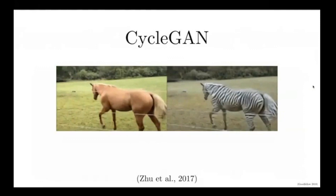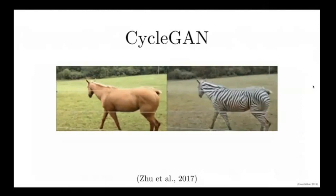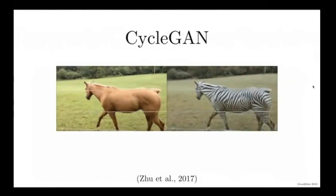It's interesting because the CycleGAN doesn't actually know what we want it to do. We tell it it should convert the horse photos into the zebra photos, but we don't ever have any interface to the model specifying that the horse itself is the part that we care about. And so it just does its best to convert all the statistics of the data.